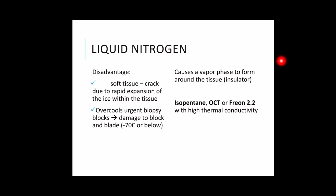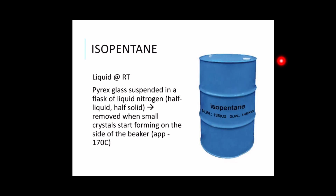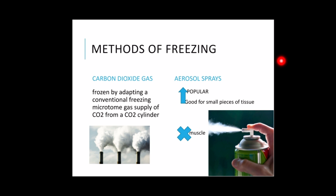This problem can be overcome by freezing the tissue in isopentane, OCT (optimal cutting temperature), or Freon 22, which has high thermal conductivity. Isopentane is liquid at room temperature. A Pyrex glass beaker is usually suspended in a flask of liquid nitrogen until a half liquid and half solid stage is reached. The beaker is removed when small crystals start forming on the side at approximately negative 170 degrees Celsius, and the tissue — affixed on a cork disc, aluminum foil, or cryostat chuck — is dropped into the cooled isopentane. Tissue blocks can also be frozen using a conventional freezing microtome with a CO2 cylinder supply or by using a specially made piece of equipment, which is typically what the cryostat uses.